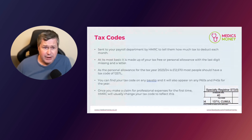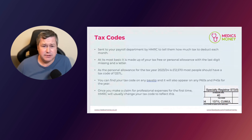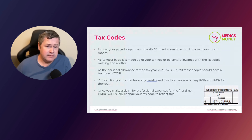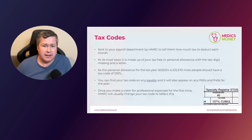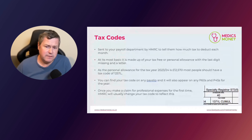The personal allowance throughout the UK is £12,570 for the current tax year, and as it's been frozen until 6th April 2028, it's going to be like that for a little while yet. Until it changes, the most common tax code in the UK should be £12,570 divided by 10 — or just knock off the last digit — with an L at the end, giving 1257L for most taxpayers throughout the UK.